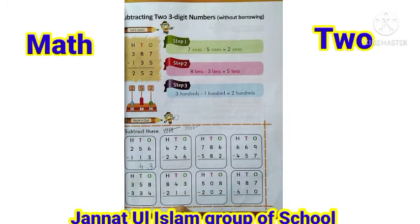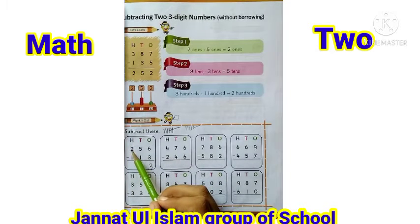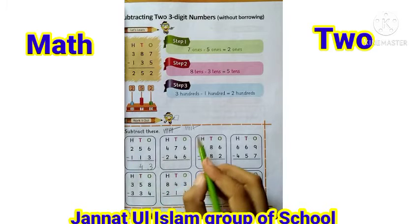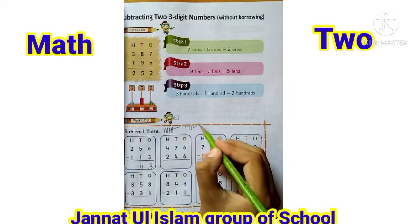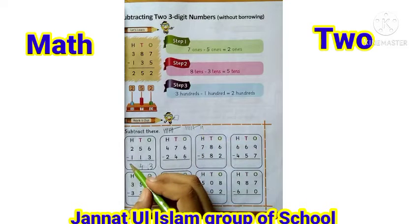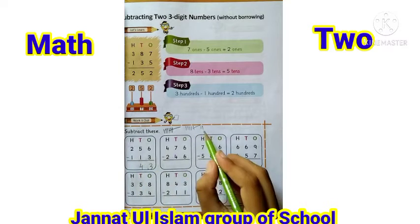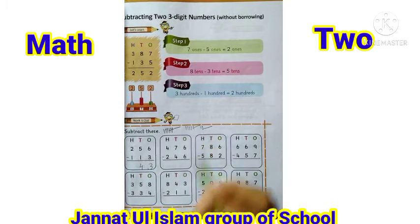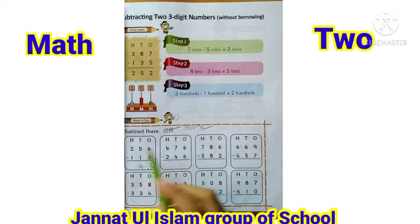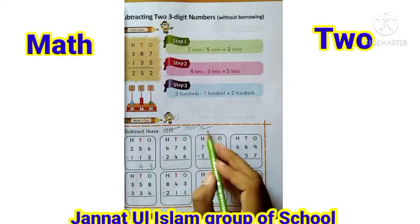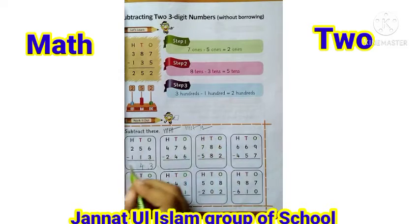اب hundreds والوں میں سے hundreds والوں کو minus کریں گے۔ اوپر two ہے، کیا کریں گے — two lines: one اور two۔ نیچے one ہے، ایک line cut کر دیں گے۔ Remaining lines کتنی ہیں — two میں سے one minus کیا تو one بچا۔